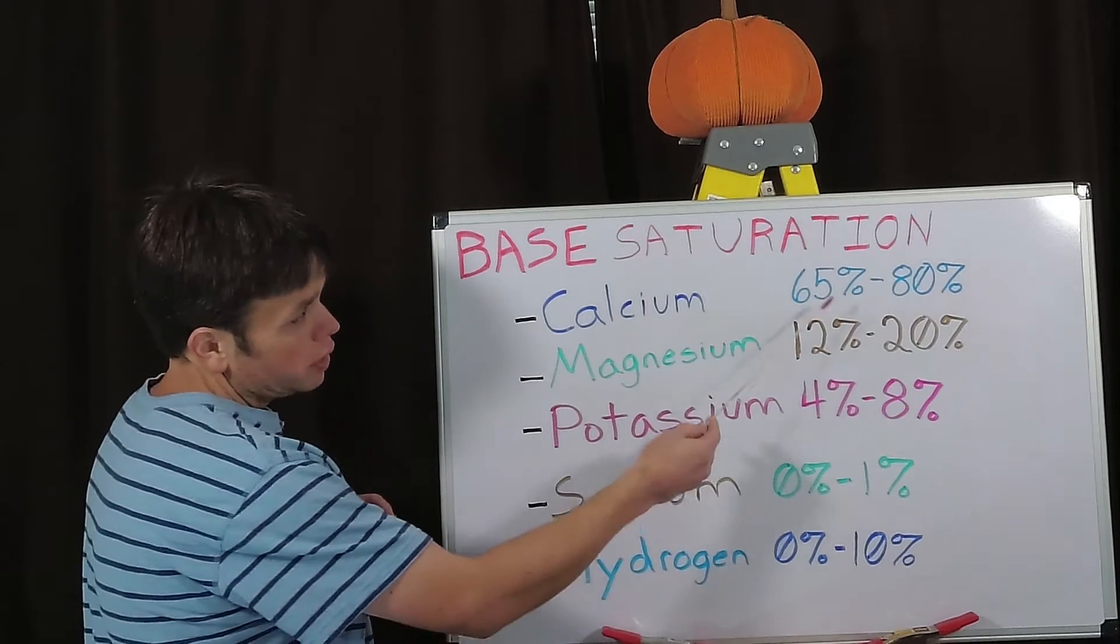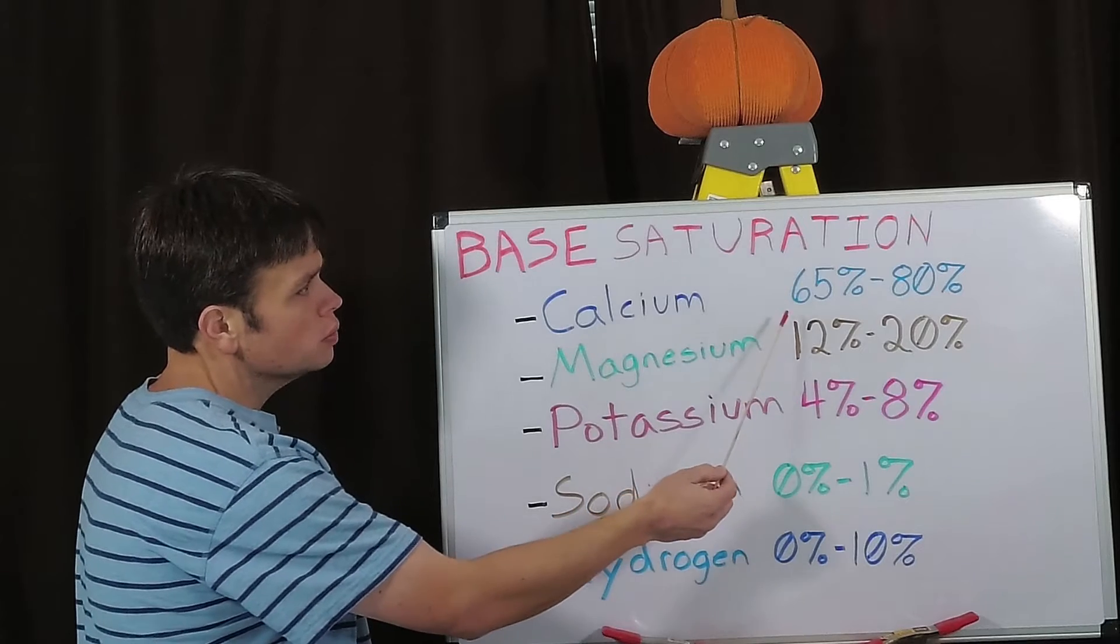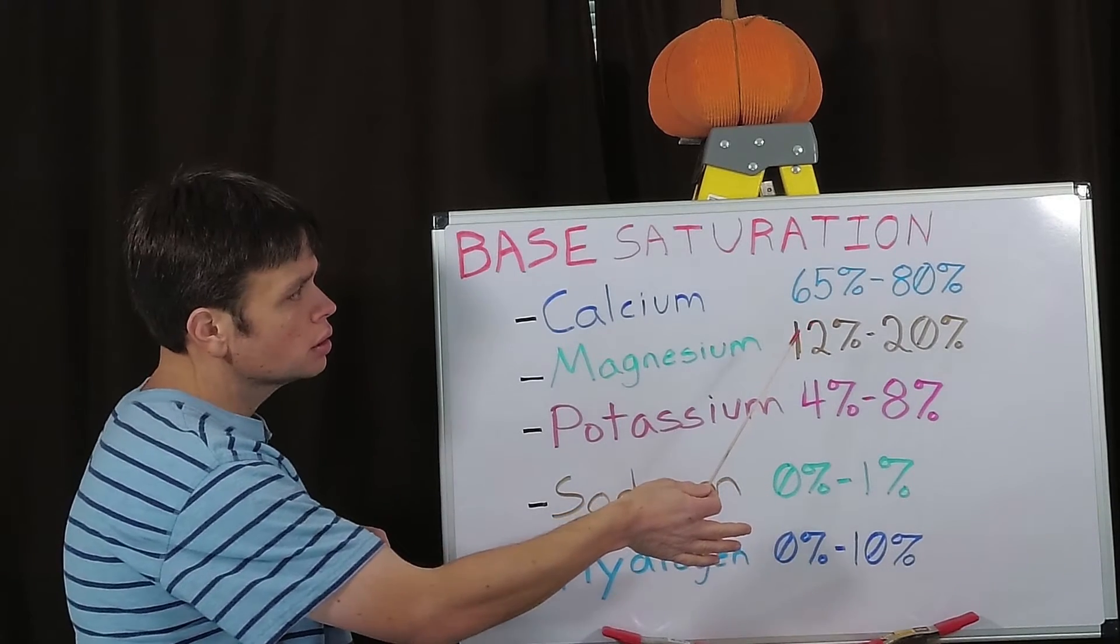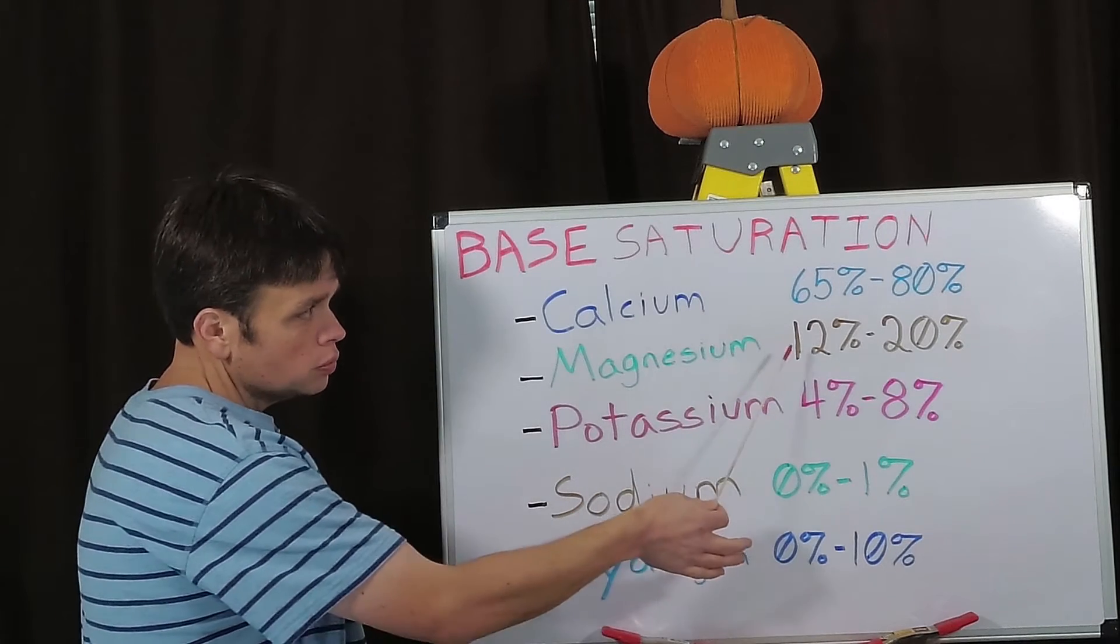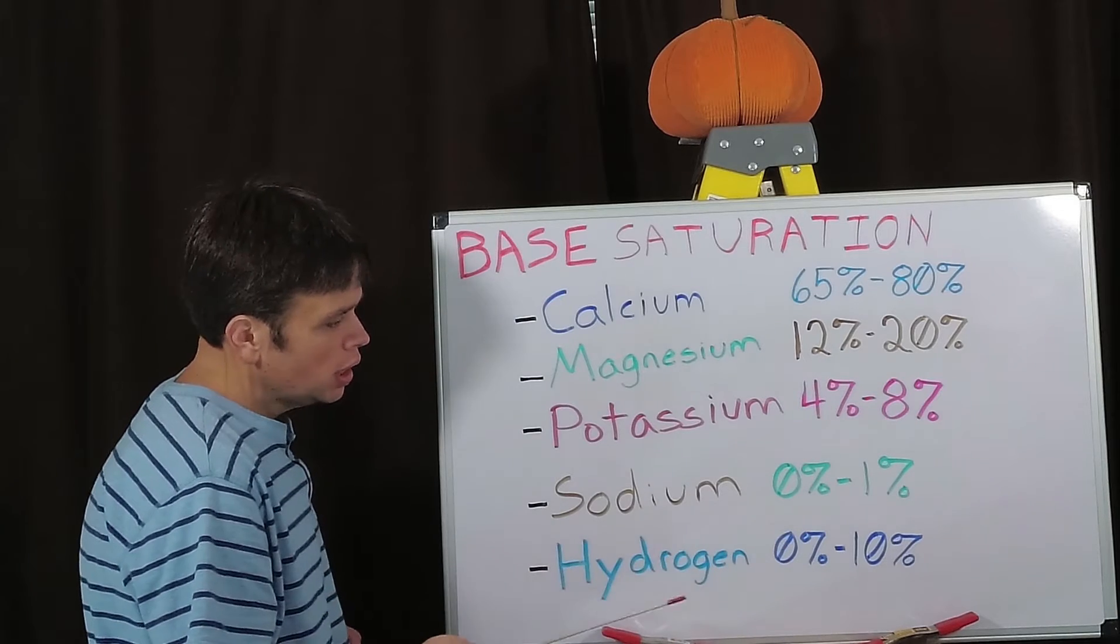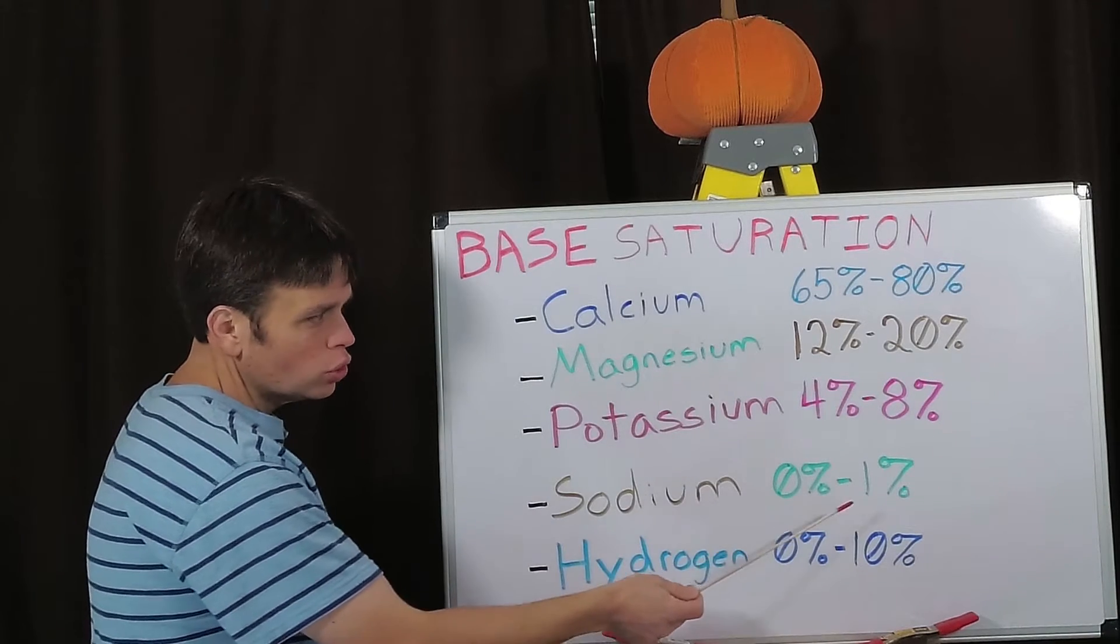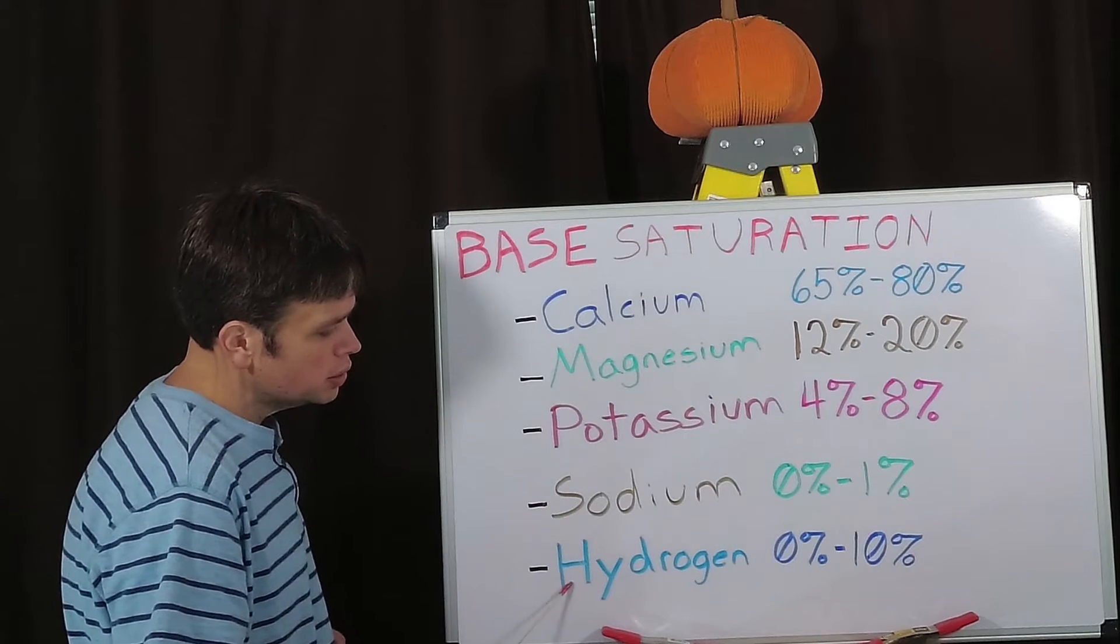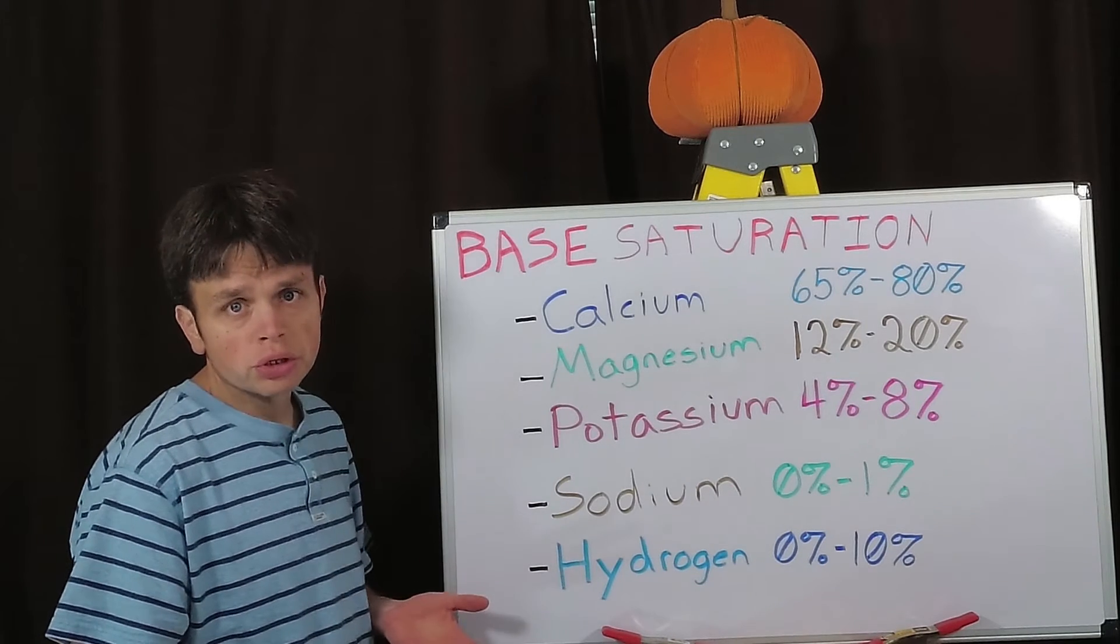As you can see, with calcium you want to be within 65 to 80 percent, magnesium 12 to 20, potassium 4 to 8, sodium 0 to 1 almost non-existent, and lastly hydrogen 0 to 10 percent.